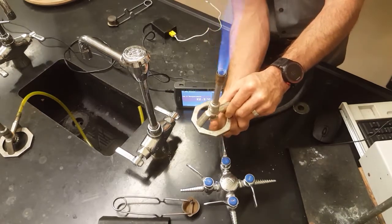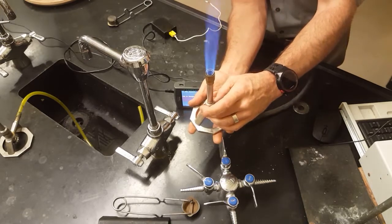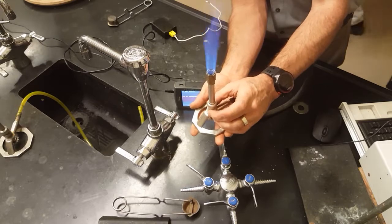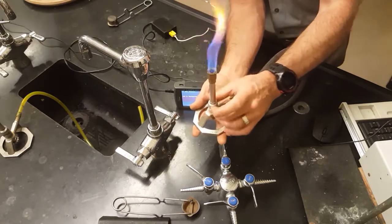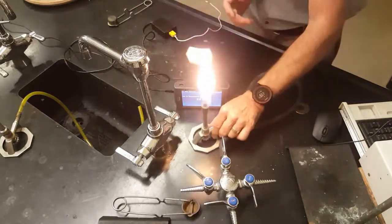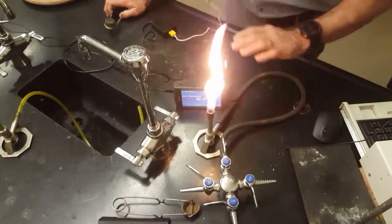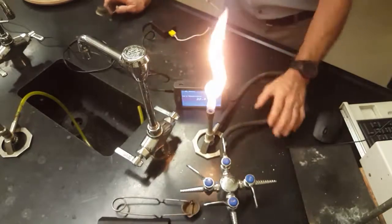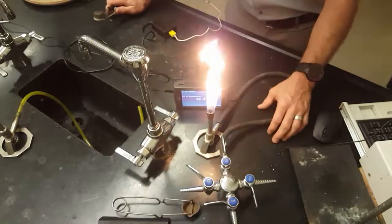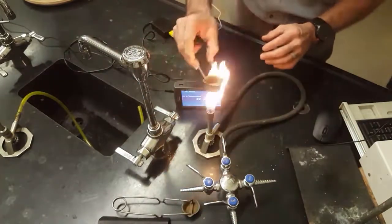I can also add more air by opening up the airport, and if I close the airport I end up with a really yellow flame. We want you to make a yellow flame today and then never again for the rest of your life make a yellow flame. It's a low-temperature flame that produces a lot of carbon.